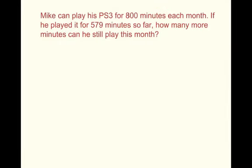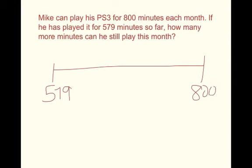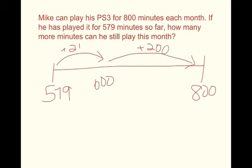I'm thinking this as an addition equation, so here we go. 579 plus N equals 800. Now I'm going to jump to 21 to get me to 600. Add that up, and then I'm going to add 200. Equal 800. And then that gave me my answer of 221.